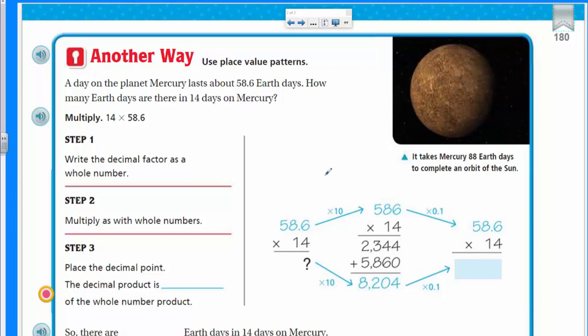We have another way. It says use place value patterns. There's Mercury. Now it takes Mercury 88 Earth days to complete an orbit around the sun. A day on the planet Mercury lasts about 58.6 Earth days. How many Earth days are there in 14 days on Mercury? Pretty amazing. We have a couple of factors.